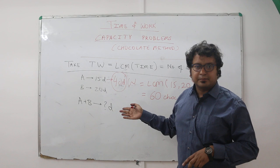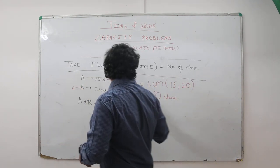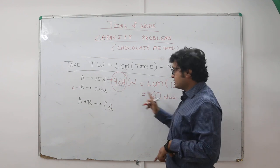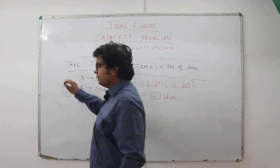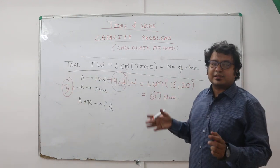Next look at B: 60 chocolates in 20 days. So per day how much? 60 by 20, that is 3 chocolates per day.